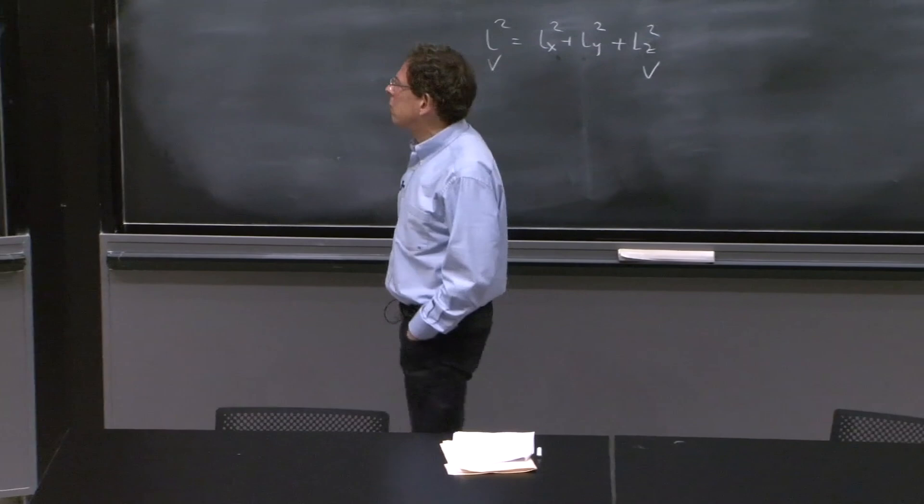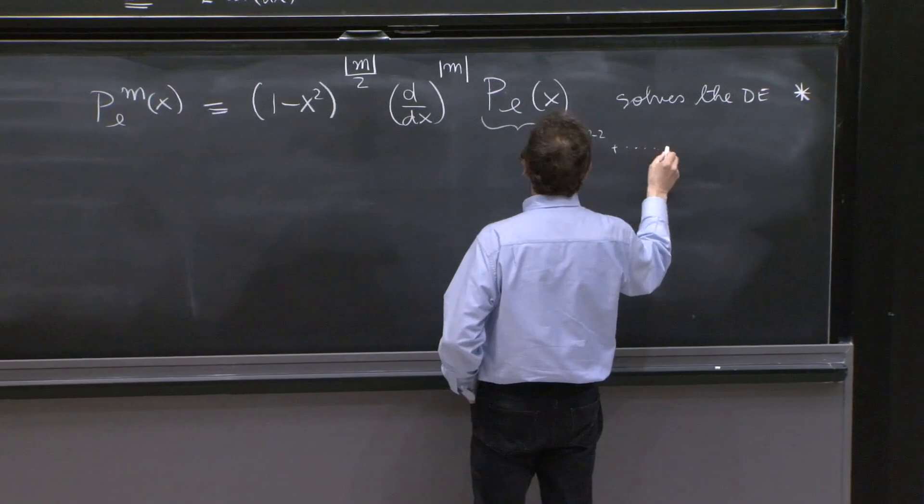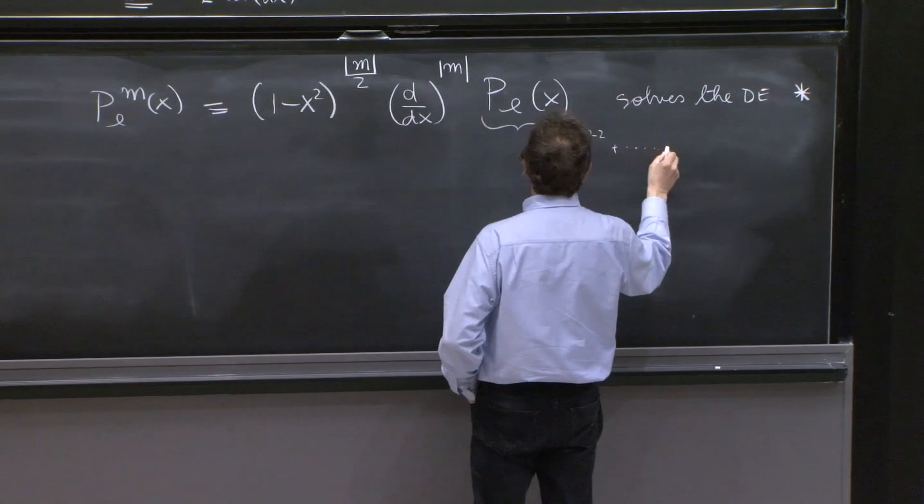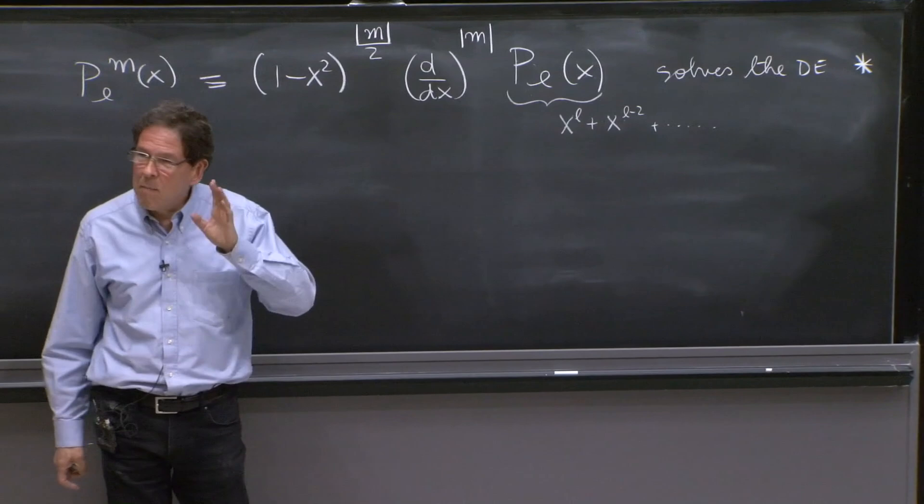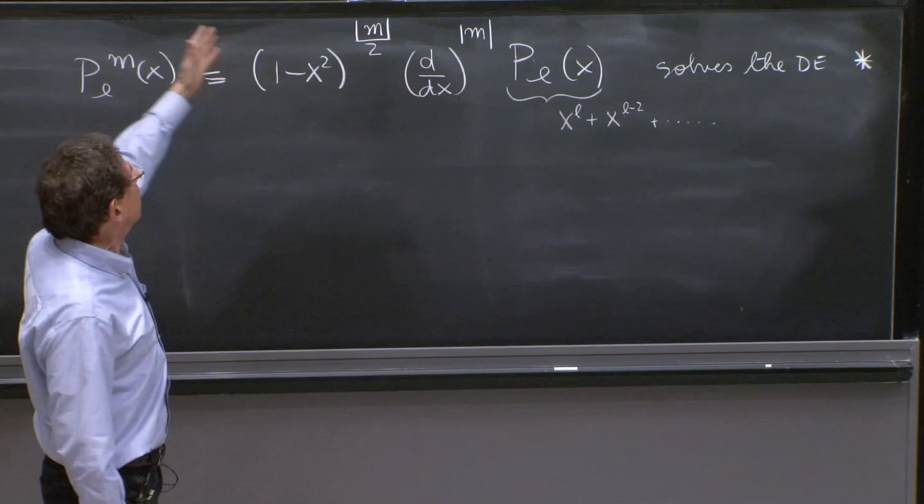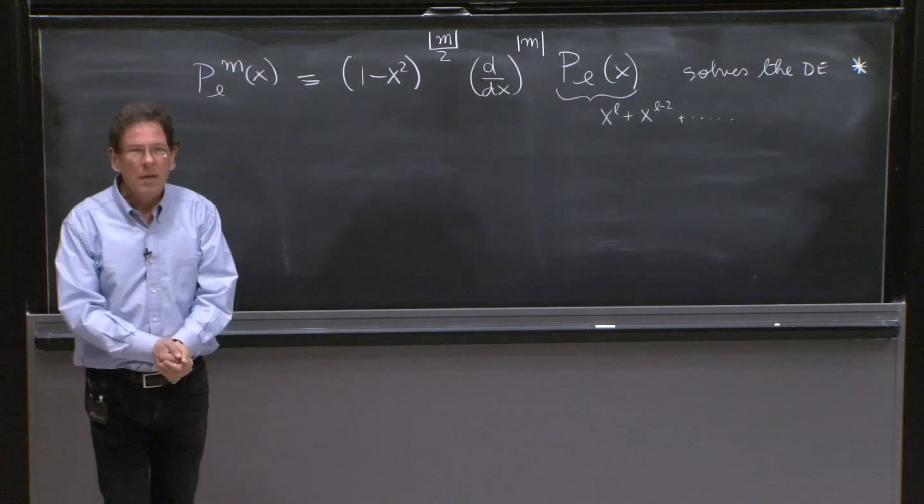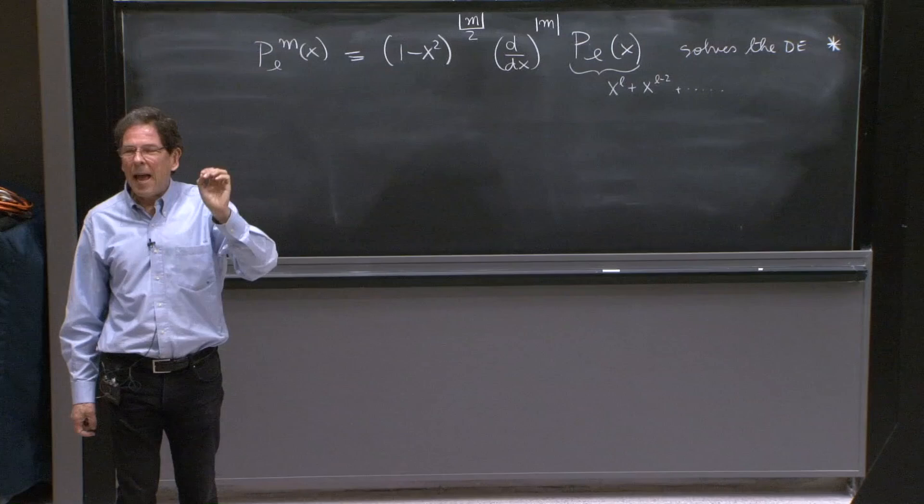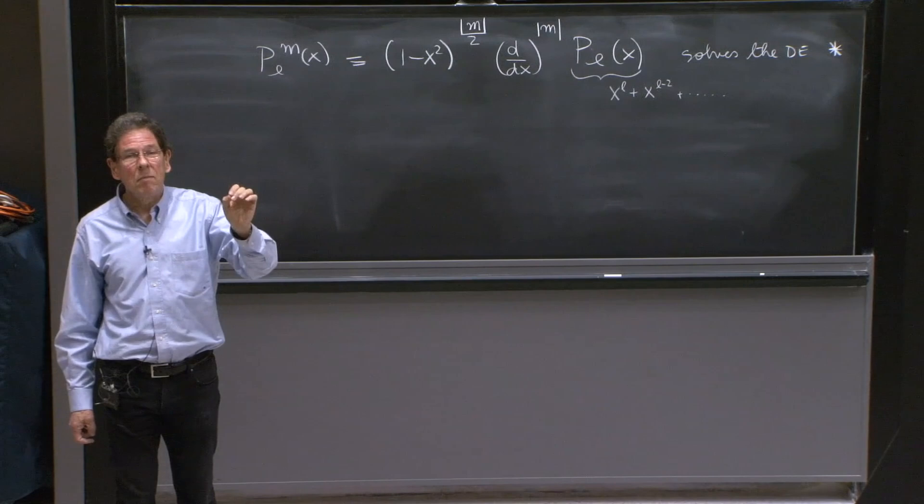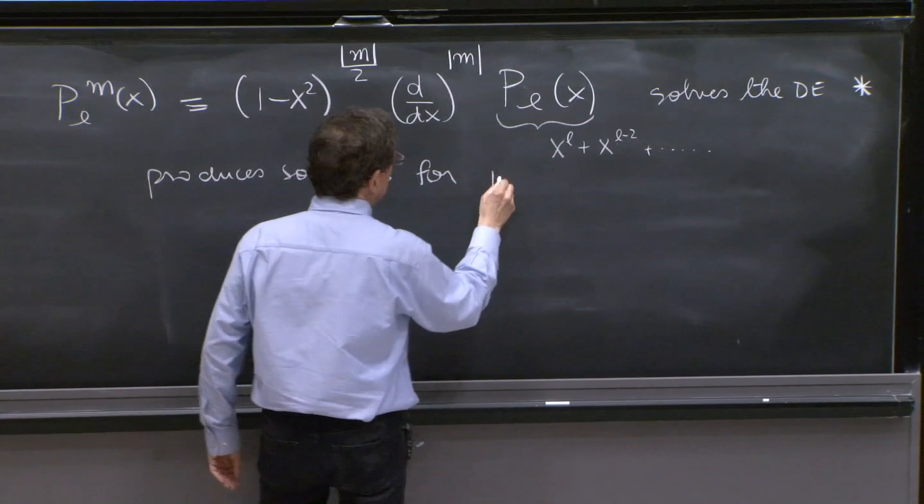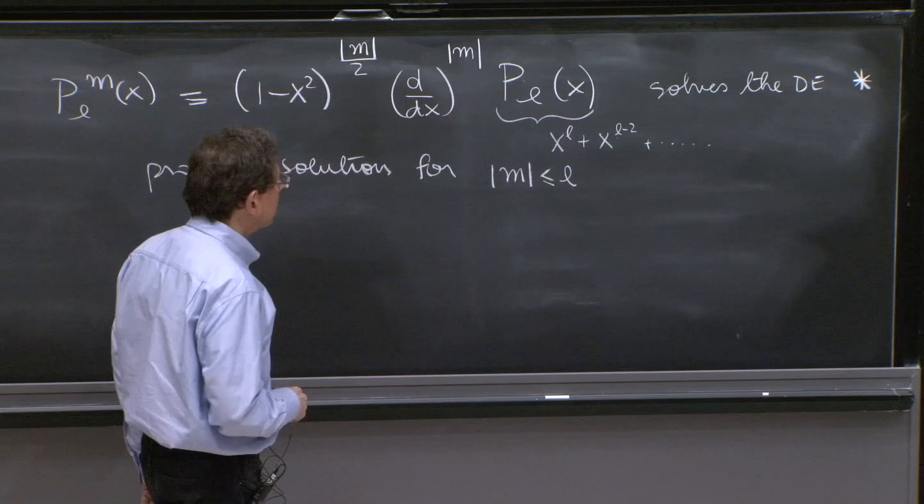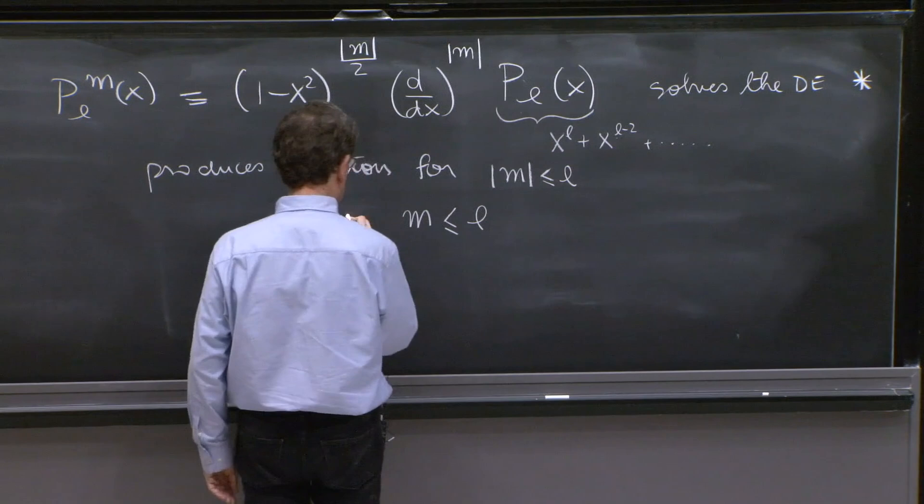I will not check it, nor the notes will check it. It's probably something you can find the calculation in some books. But it's not all that important. The important thing to note here is the following. That this provides solutions, since this polynomial is like x to the l plus x to the l minus 2 plus coefficients like this. And that is, you can take at most m equal l derivatives. If you take more than l derivatives, you get 0. And there's no great honor in finding 0 solutions of this equation. These are no solutions.